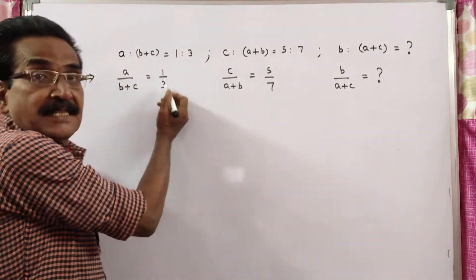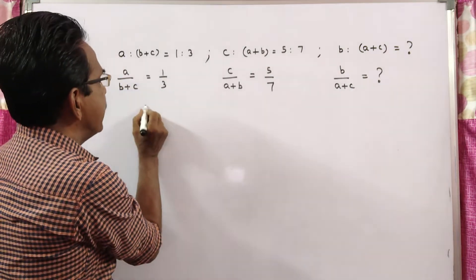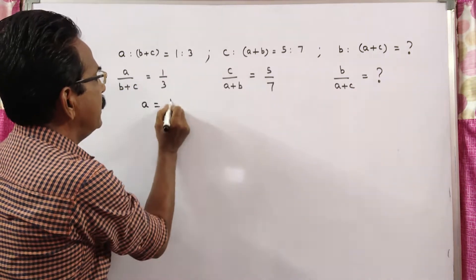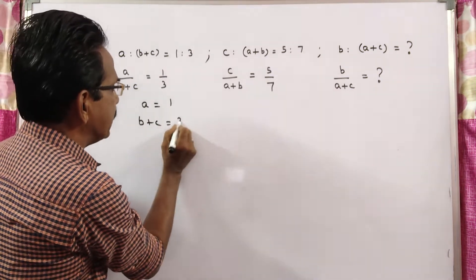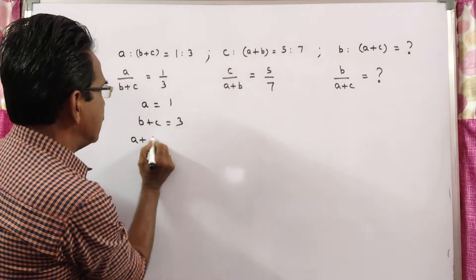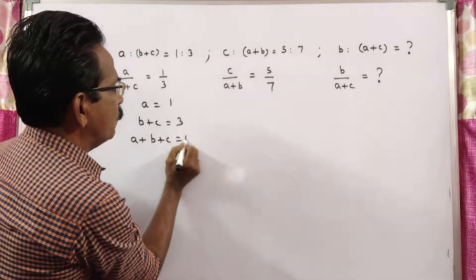See friends, a is to b plus c is equal to 1 by 3 implies a is equal to 1 and b plus c is equal to 3, it implies a plus b plus c is equal to 4.